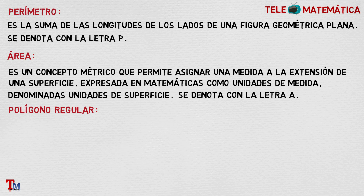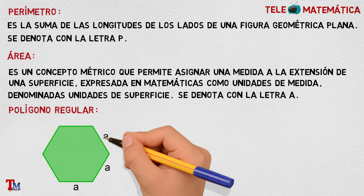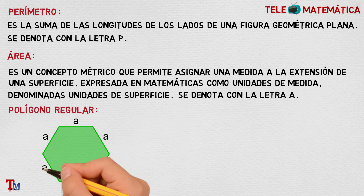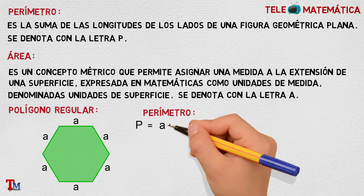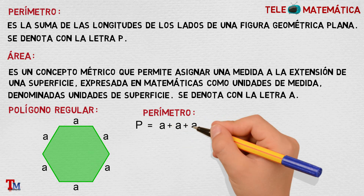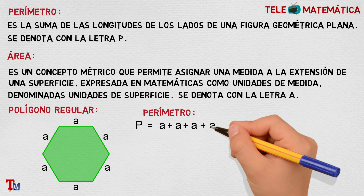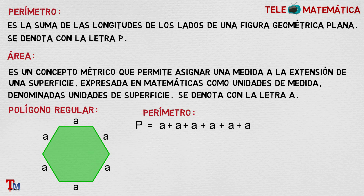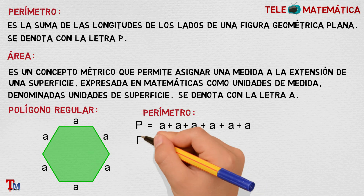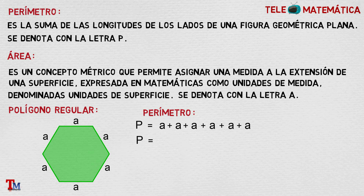Tenemos un hexágono cuya longitud de los lados está definida por A. Definamos el perímetro, que se define como P es igual a la suma de las longitudes de los seis lados del polígono. Por lo que podemos concluir que el perímetro de un polígono regular se calcula como la cantidad de lados — en este caso seis — por la longitud del lado.